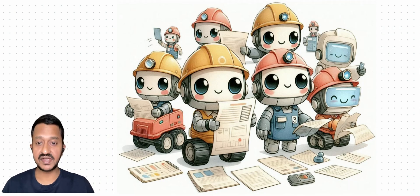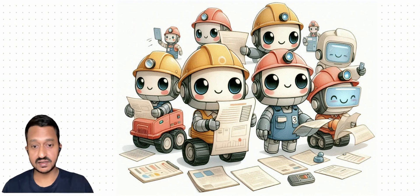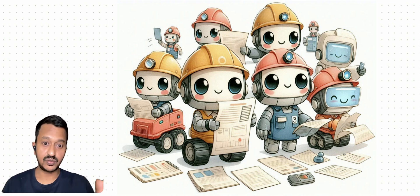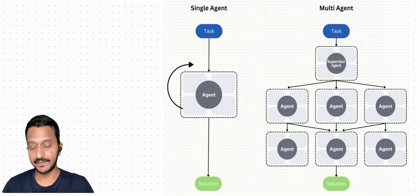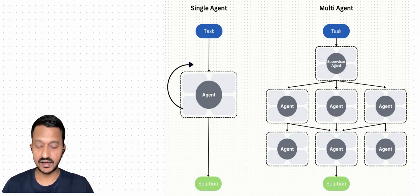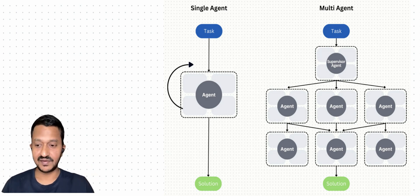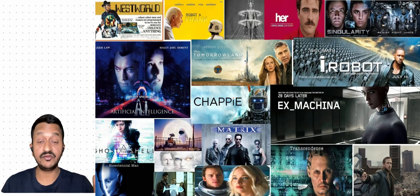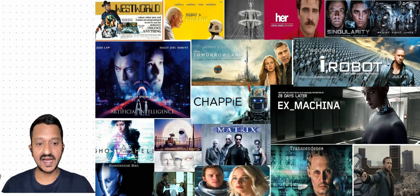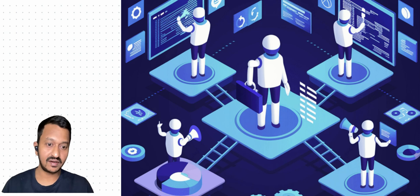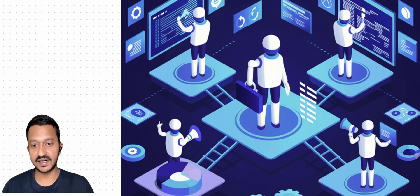Imagine a team of digital workers, each with their own specialized skills, working together to solve a complex problem. That's the world of AI agents we are living in today. AI agents are more than just a theoretical concept — we used to see this in Hollywood movies, but now it has become a reality. These AI agents collaboratively work together through sophisticated communication processes and protocols.